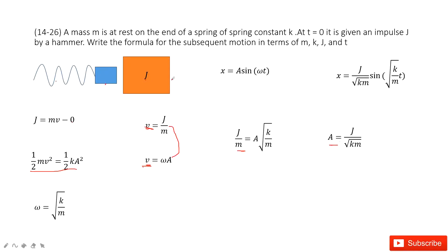The mass is stationary at equilibrium, then hit by the hammer. So we write the formula as x equals A sin omega t. We've found amplitude A equals J over square root of km, and omega equals square root of k over m. Inputting these values, we get x equals J over square root of km times sin of t times square root of k over m. Thank you.